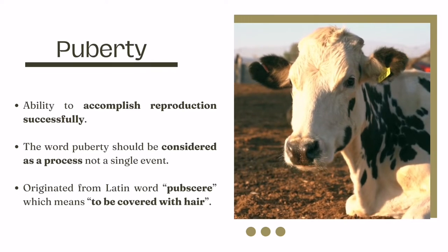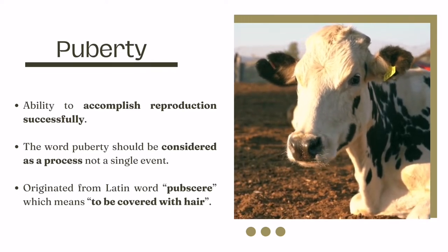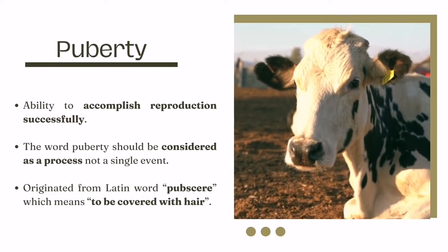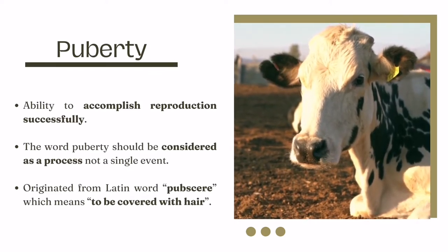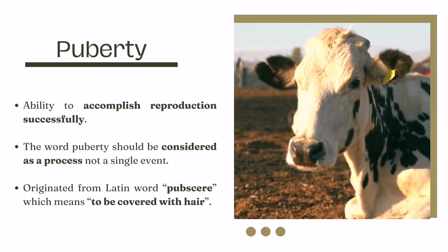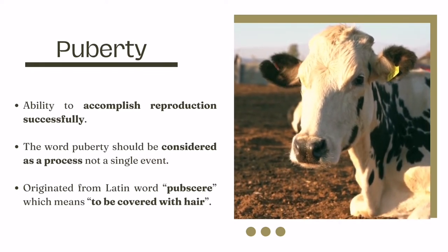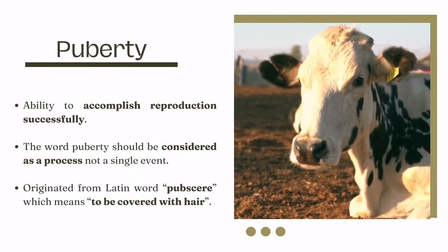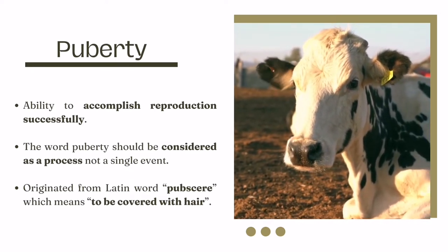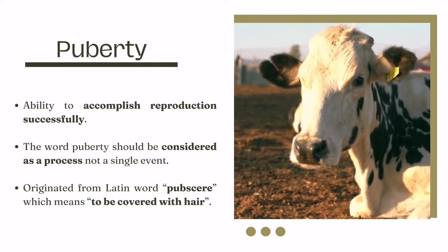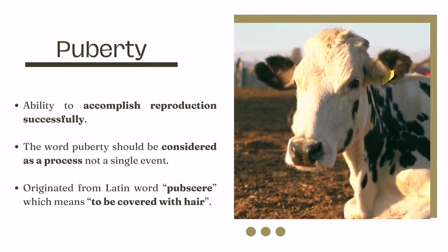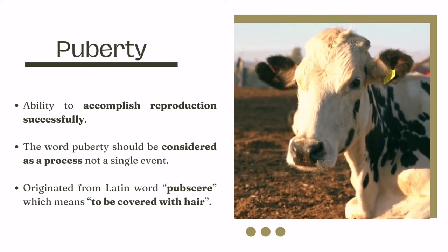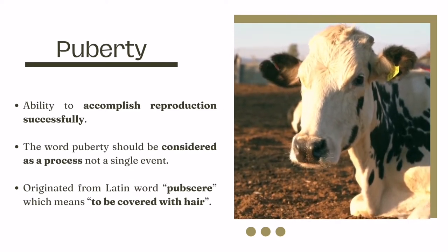Generally, puberty can be defined in both the male and female as the ability to accomplish reproduction successfully. Puberty should be considered as a process, not a single event. The term puberty originated from the Latin word 'pubsir' which means to be covered with hair. This definition applies to the development of hair in the pubic area, armpits and legs in women and men, and also the development of beard in men as an indicator of pubescence. This obviously does not apply to other animals.